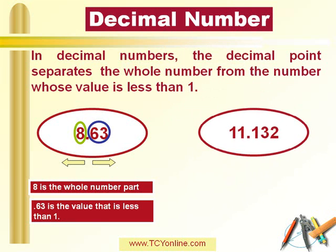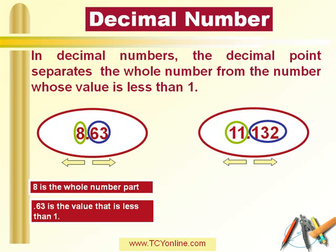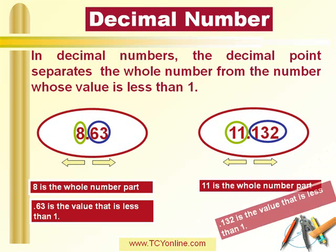Similarly, we have a second example. Here in 11.132, the number 11 is the whole number part, while 0.132 is the number whose value is less than 1.